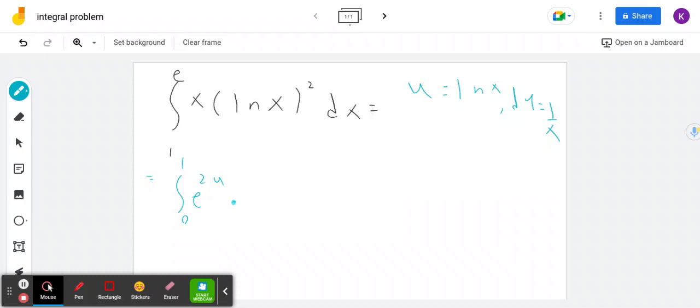And then times we have u squared, du. And so this becomes a nice integration by parts problem. I'm going to use a di method or the table method.